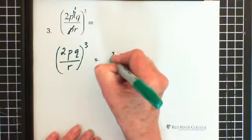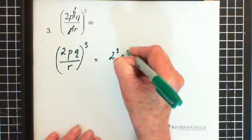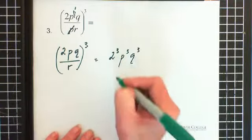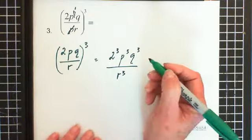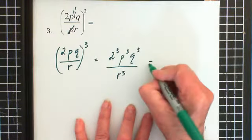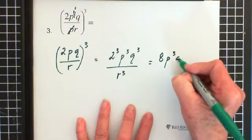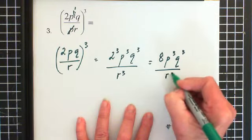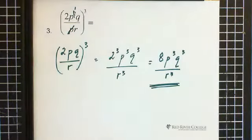Now I cube everything inside the brackets. Okay, so this becomes 2 cubed, p cubed, q cubed and r cubed. And 2 cubed is 8. So we end up with 8p cubed, q cubed, all over r cubed. And this is the final answer.